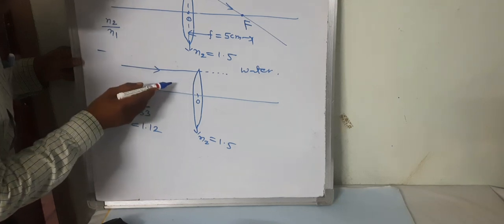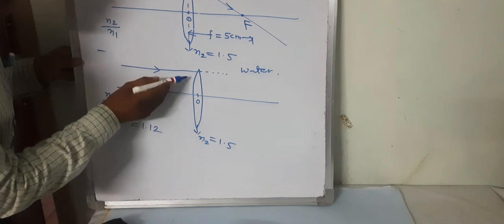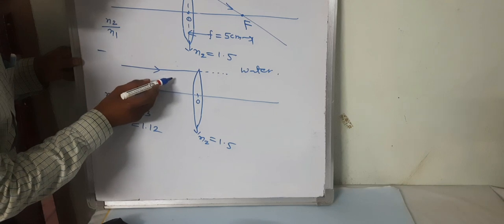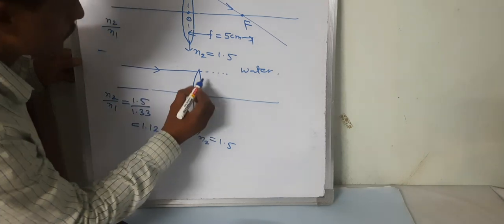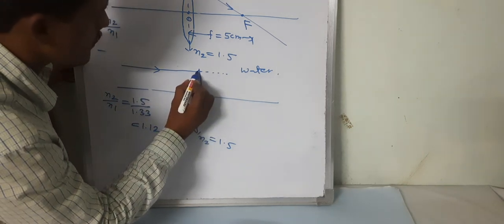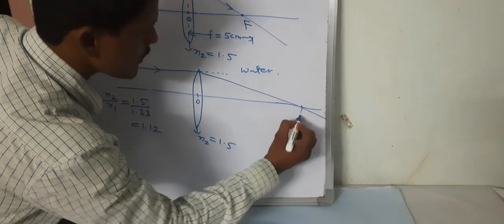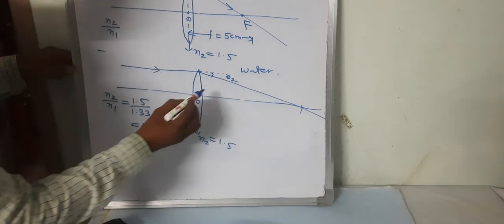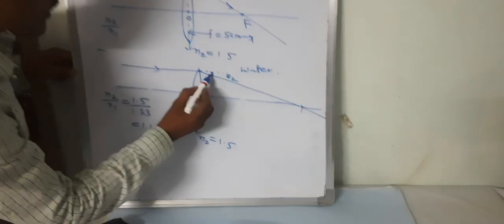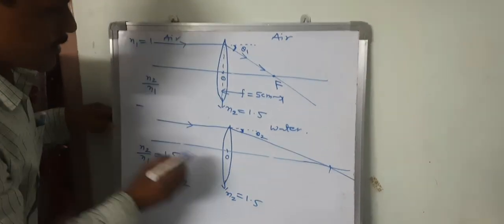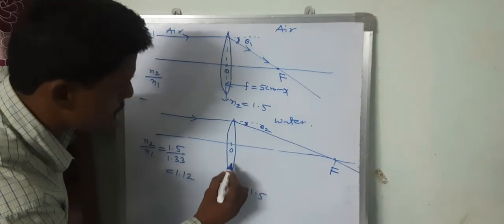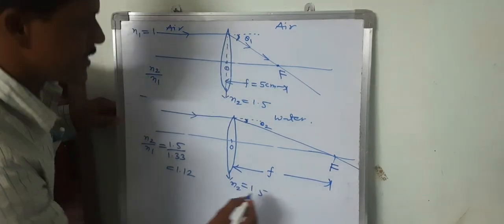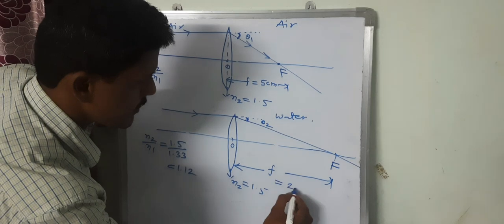Since the optical power decreases, the light ray bends with a smaller angle of refraction — call it theta 2. This angle is less compared to theta 1 in air. So the focus is located far away from the optical center, meaning the focal length increases — which we measured as 20 centimeters.